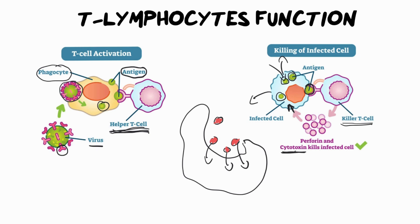Now, helper T cells are really important and linked to HIV. People who have HIV — the virus lives inside of helper T cells. That means helper T cells in people with HIV don't work, and the very virus they're trying to protect themselves against actually lives in the cells that do the alerting. It's like the HIV virus has taken the helper T cells hostage — they can't alert, they can't shout for help.